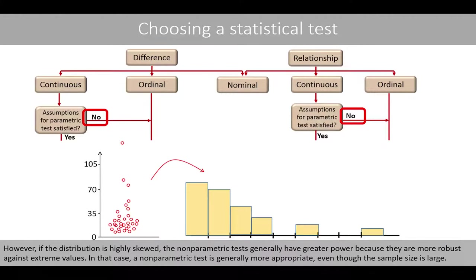However, if the distribution is highly skewed, the non-parametric tests generally have a greater power, because they are more robust against extreme values. In that case, a non-parametric test is generally more appropriate, even though the sample size is large.